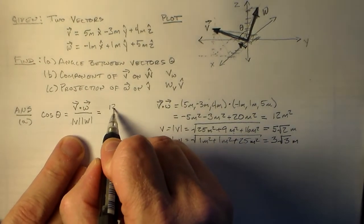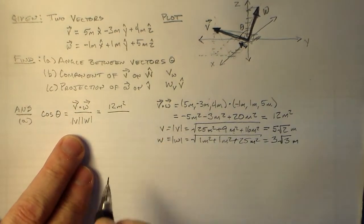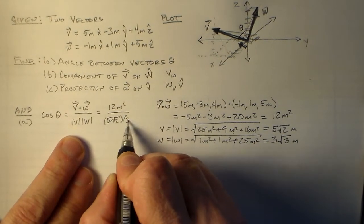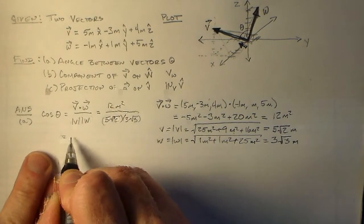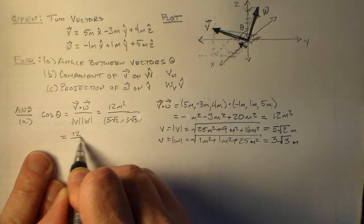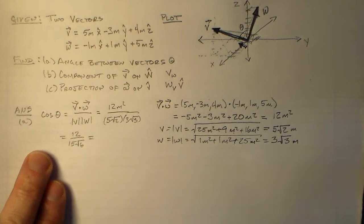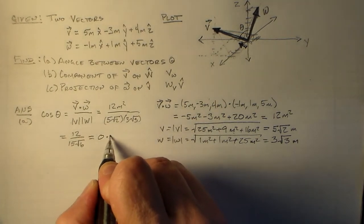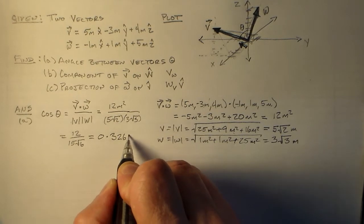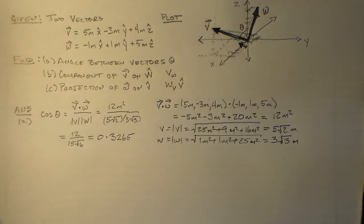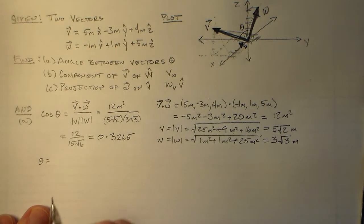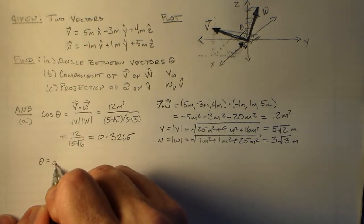We've got this 12 meters squared over 5 root 2 times 3 root 3, which we like to call 12 over 15 root 6. Okay, and that's a number, so you have to play with your calculator, and your calculator is going to tell you that it's 0.3265. Well, you're doing okay, aren't you happy? I know you're happy. How could you not be happy doing what you're doing?